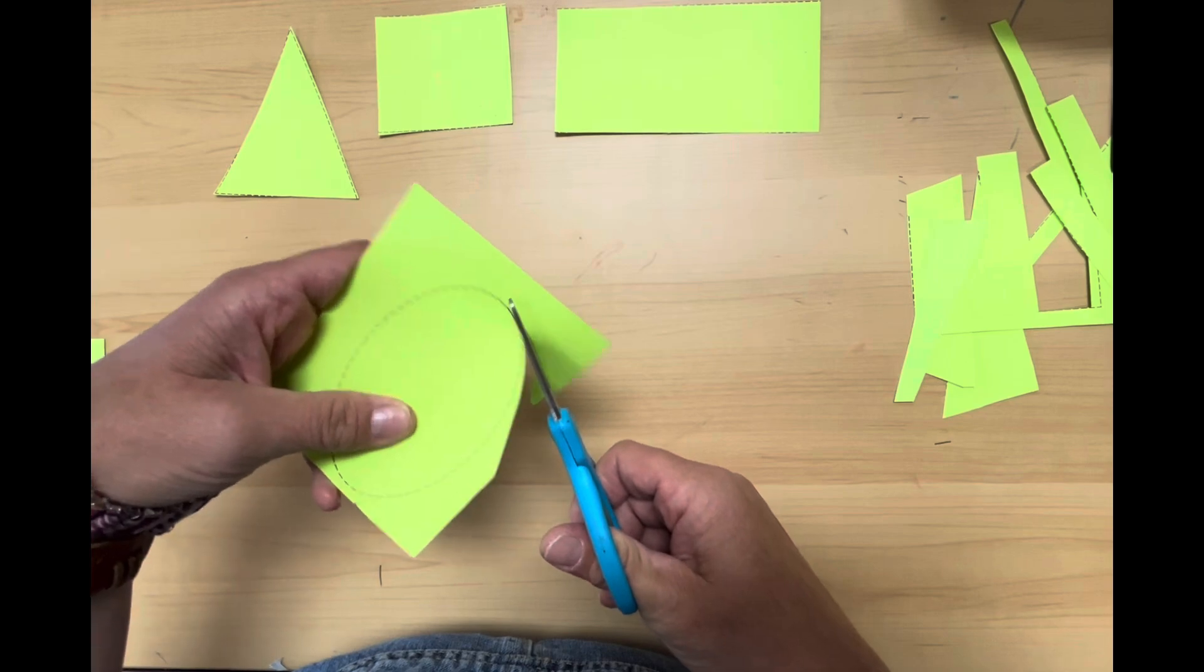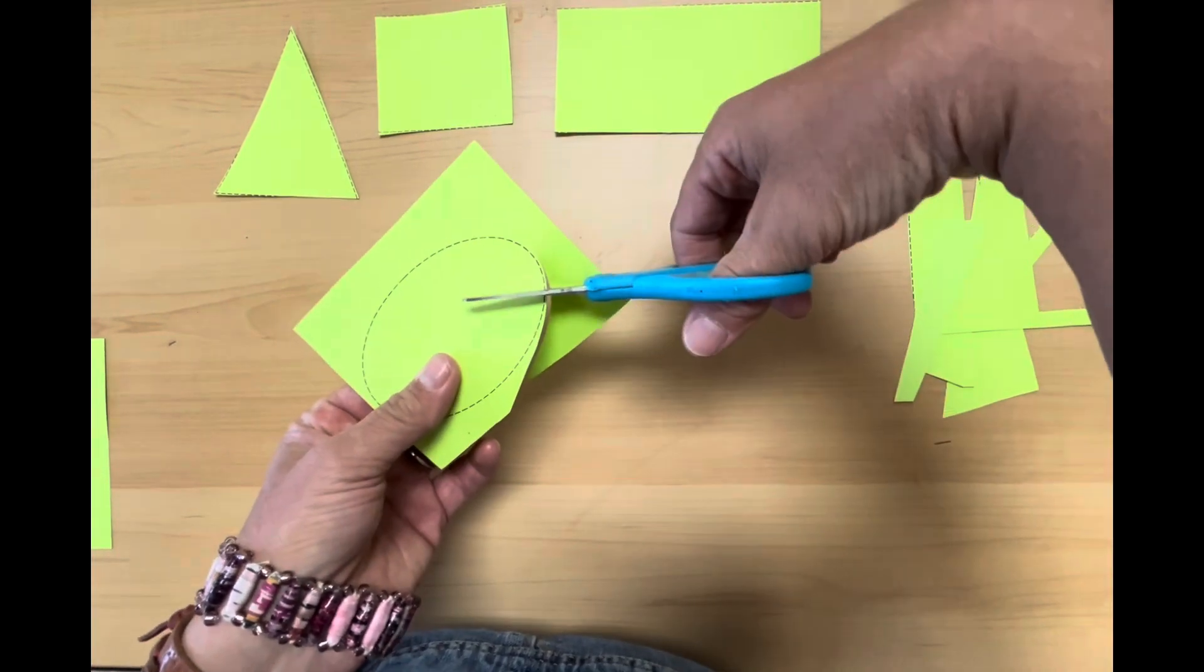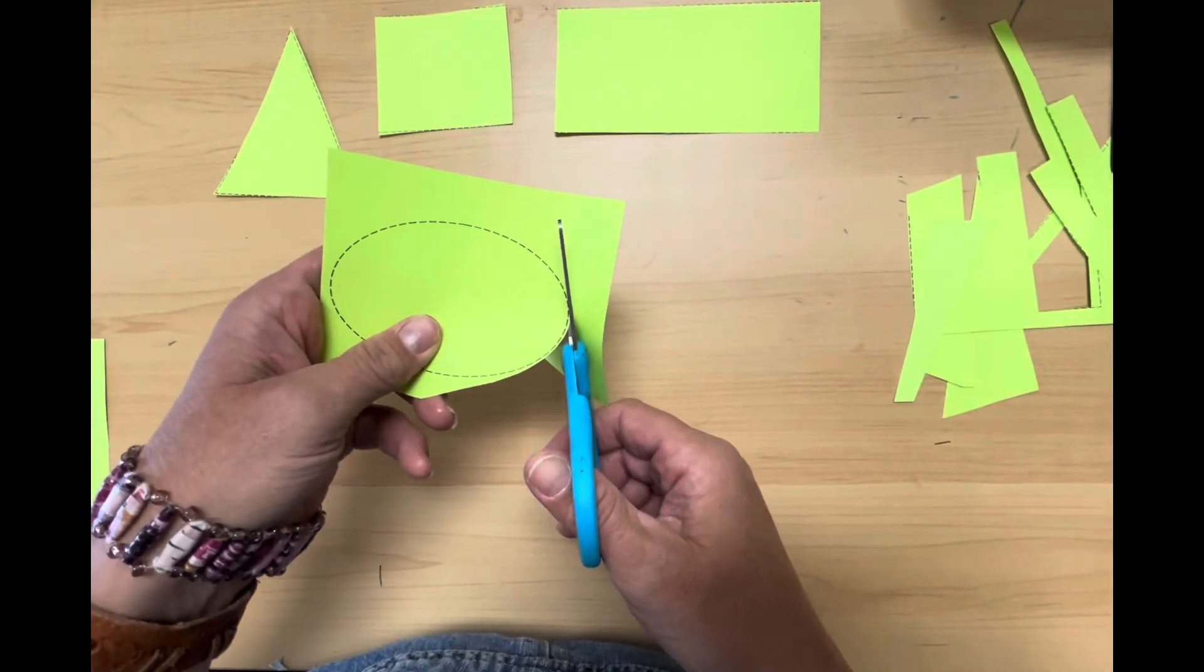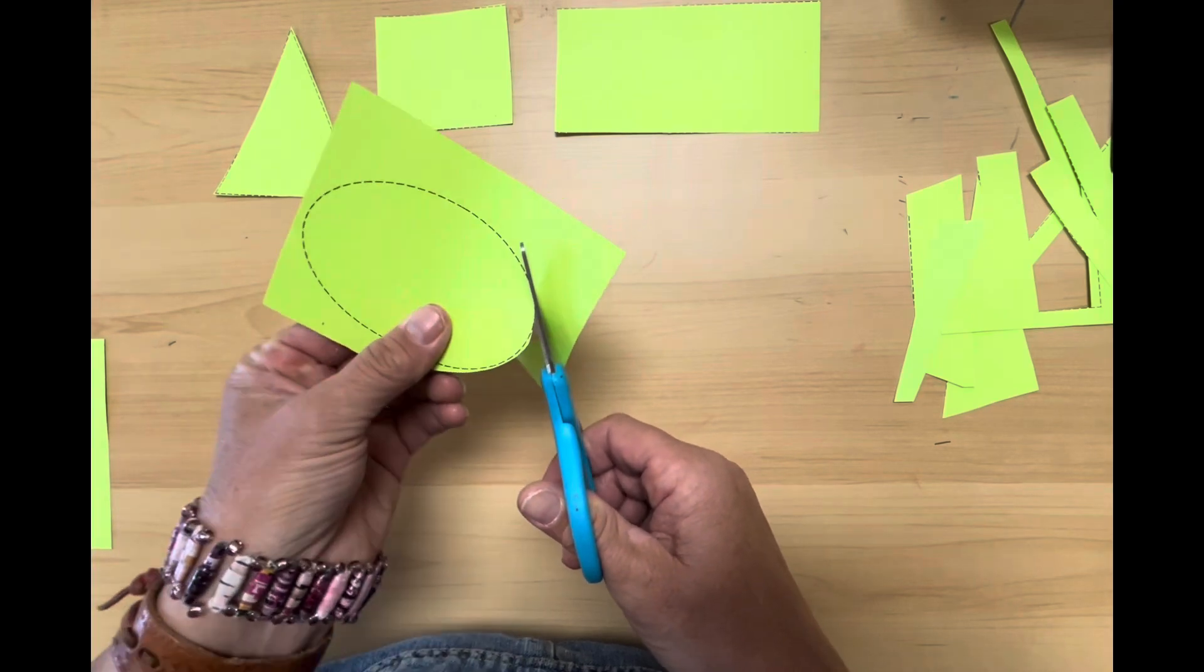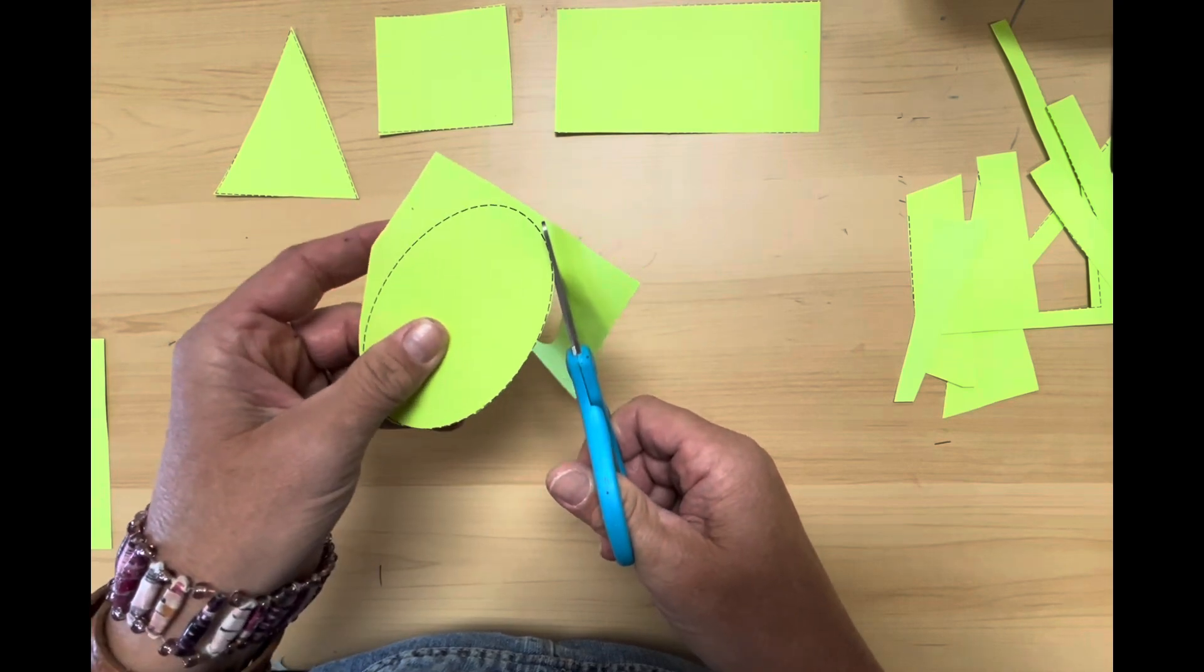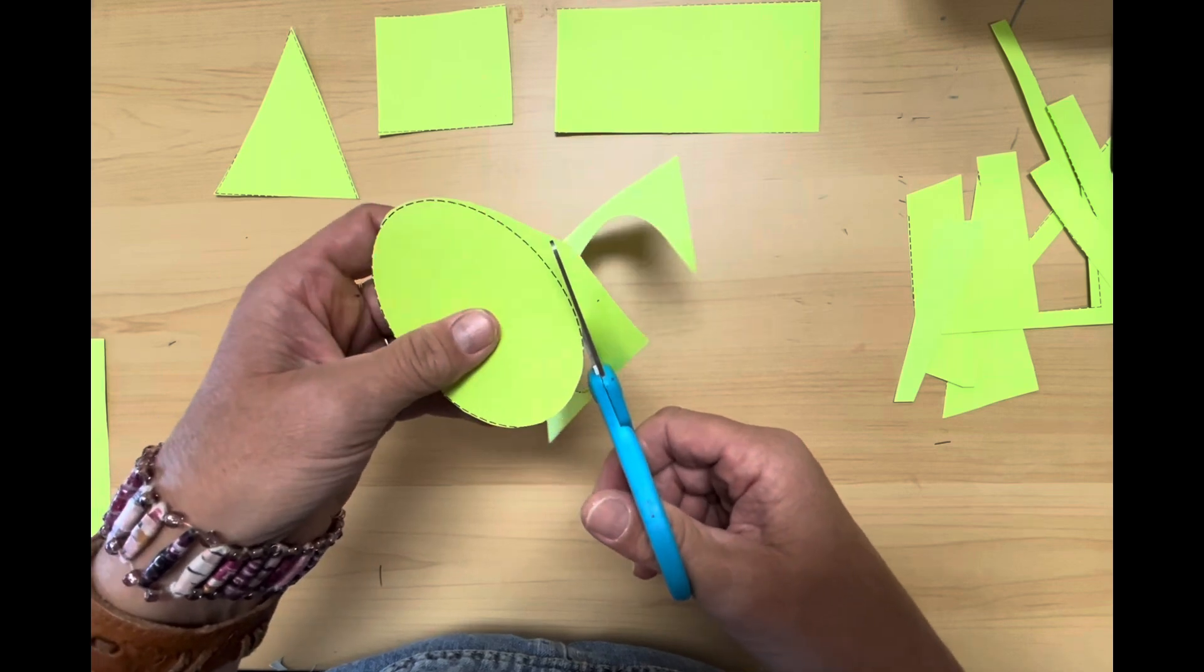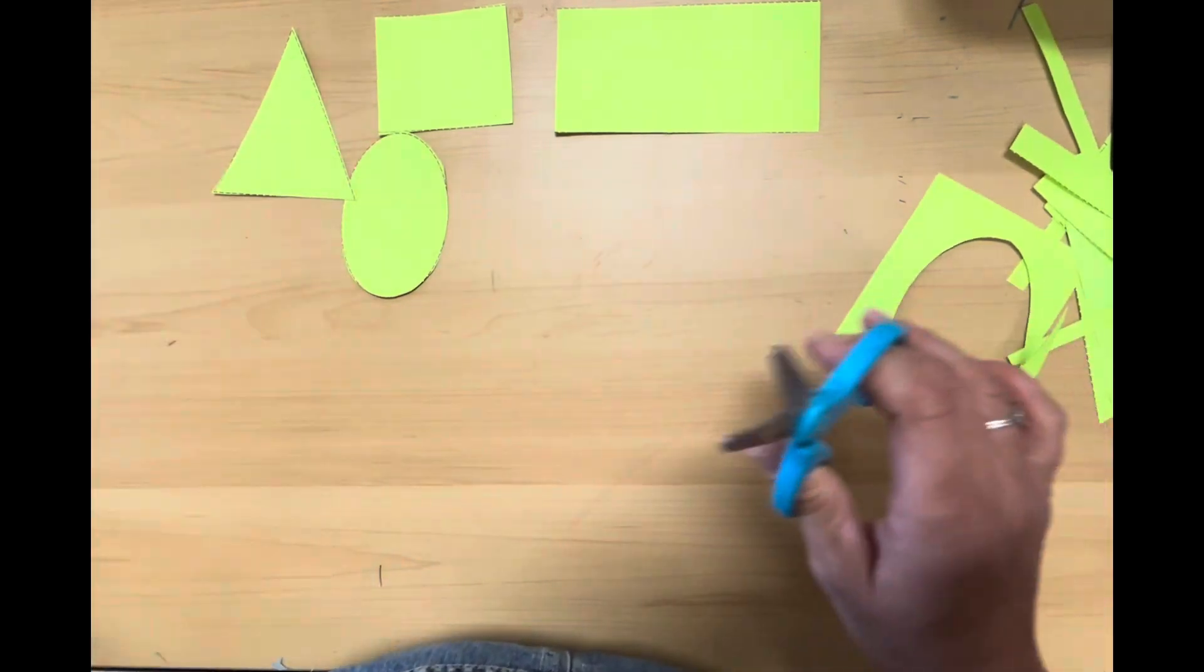With my oval, I keep my scissors pointed away from me. I don't want to turn them sideways. I keep them pointed straight ahead and I cut slowly. I use my other hand that doesn't have the scissors to turn the paper as I'm cutting. This takes a lot of practice, so go slowly and do your best.